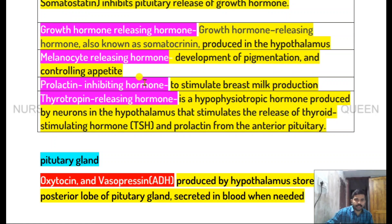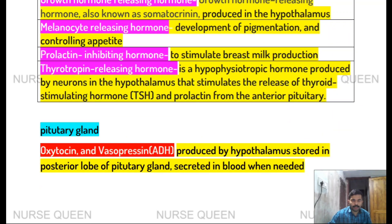Melanocyte-releasing hormone is responsible for development of pigmentation and controlling appetite. Melanocyte determines our skin color. Prolactin inhibiting hormone stimulates milk production.